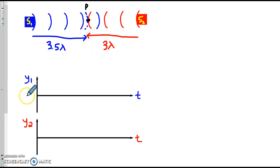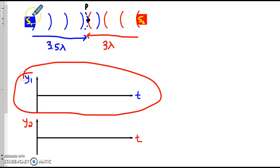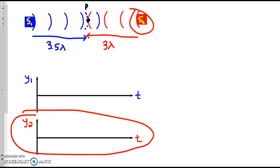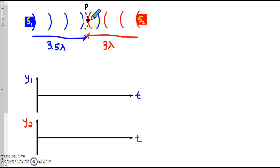So if we sketch out the displacement graphs, here are the displacements from S1, and here are the displacements being produced by S2. And remember, we're drawing the displacement of point P due to the two waves.